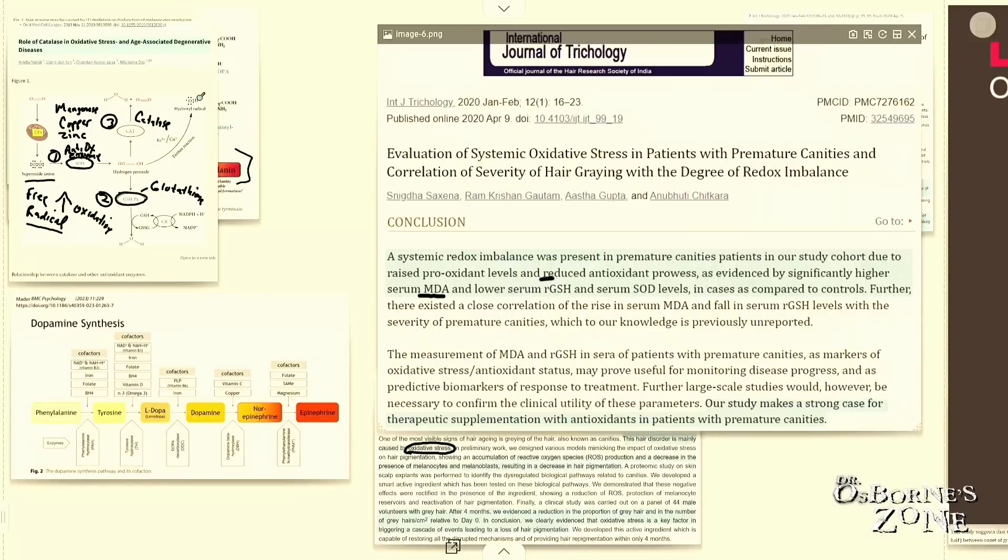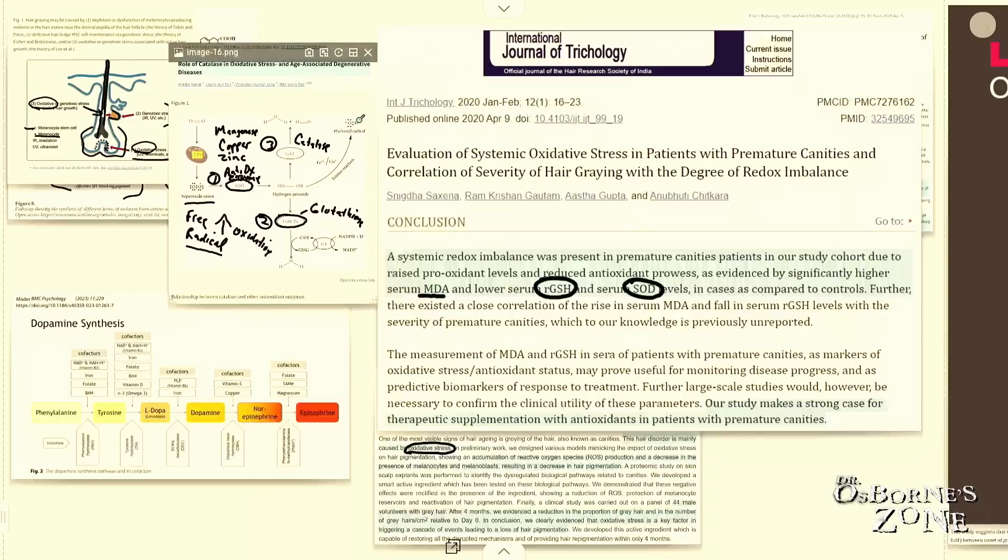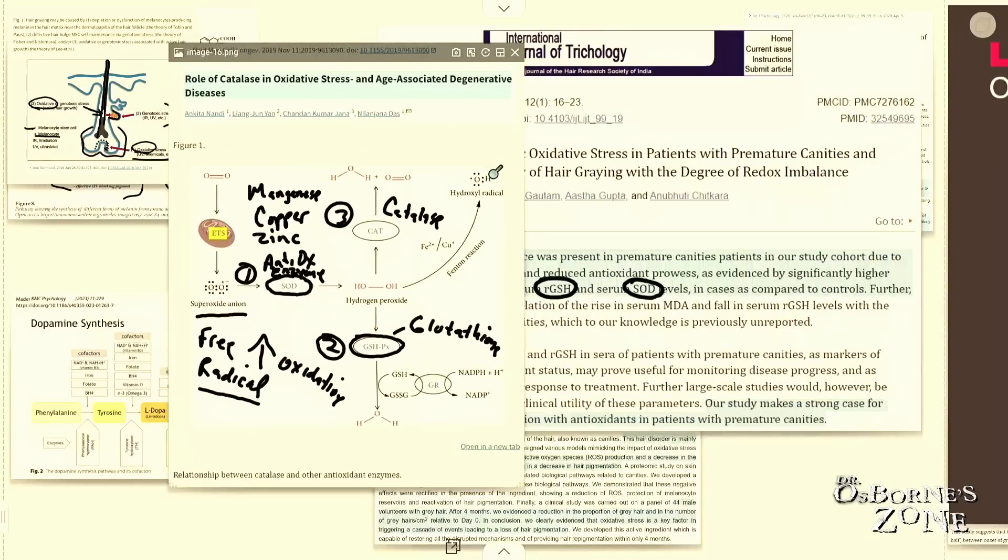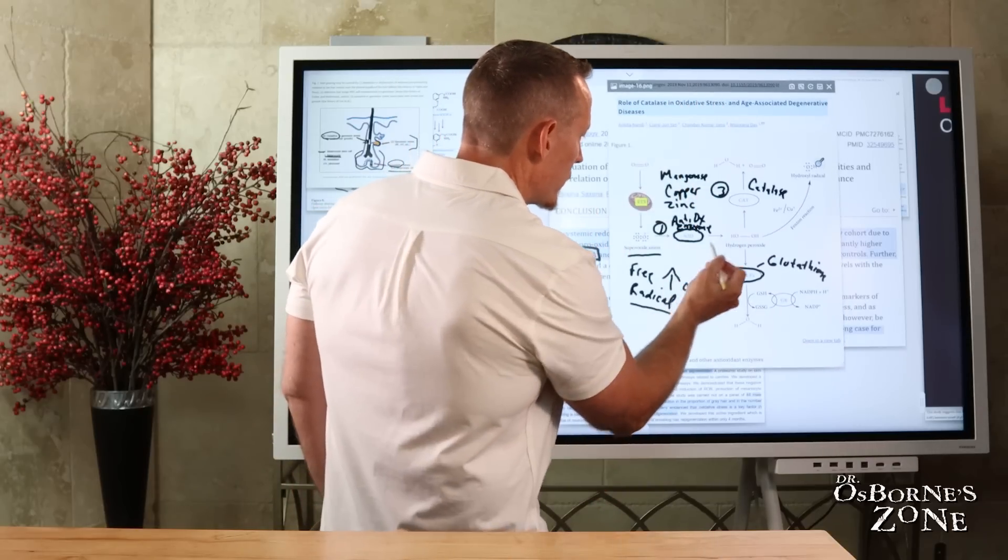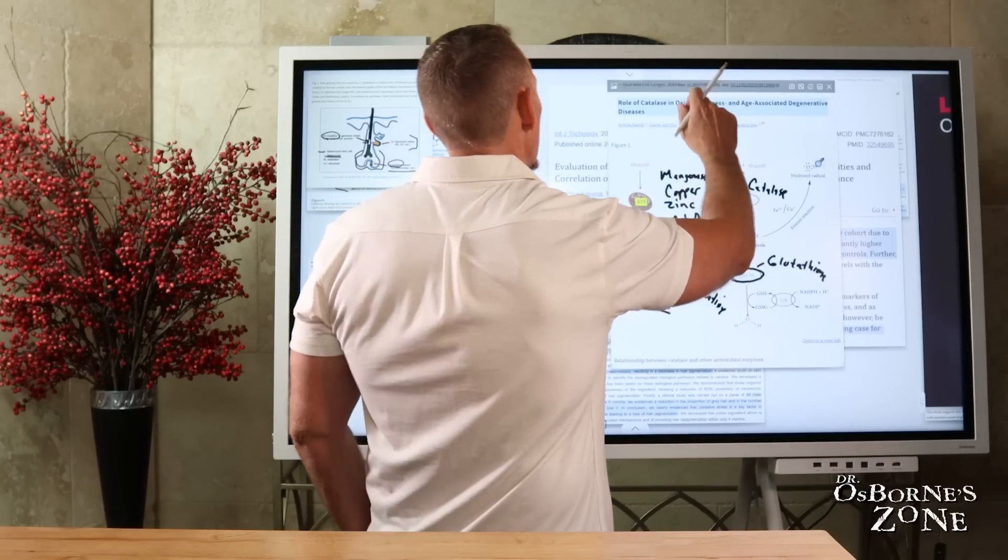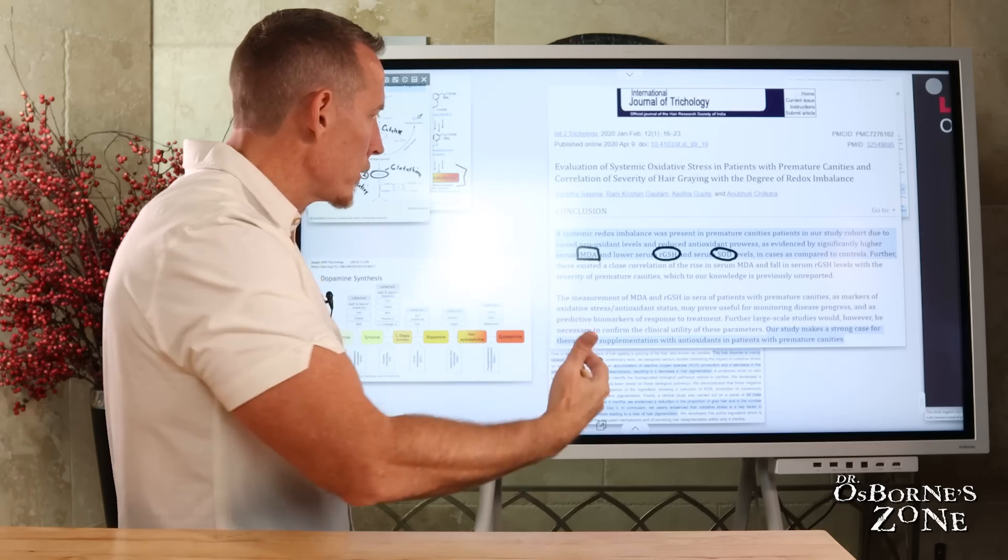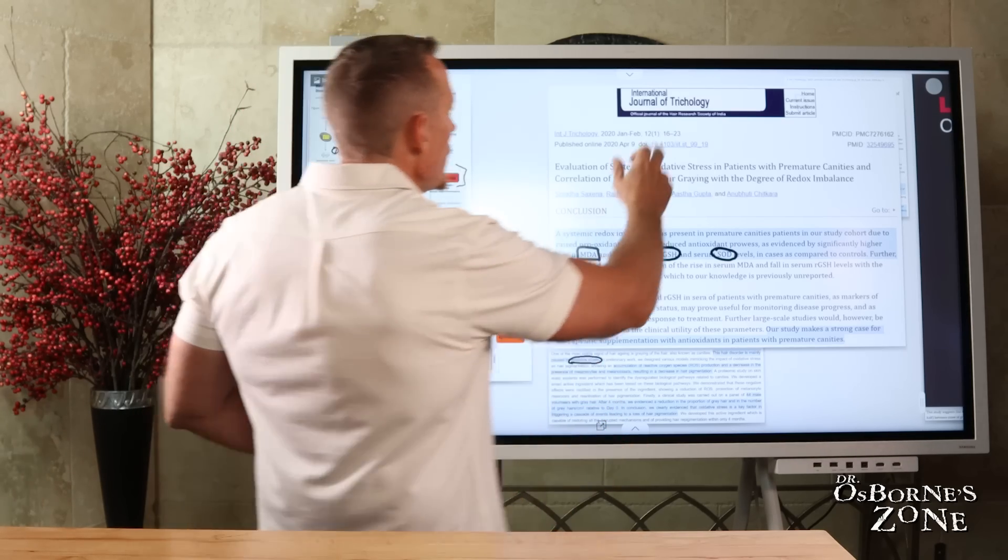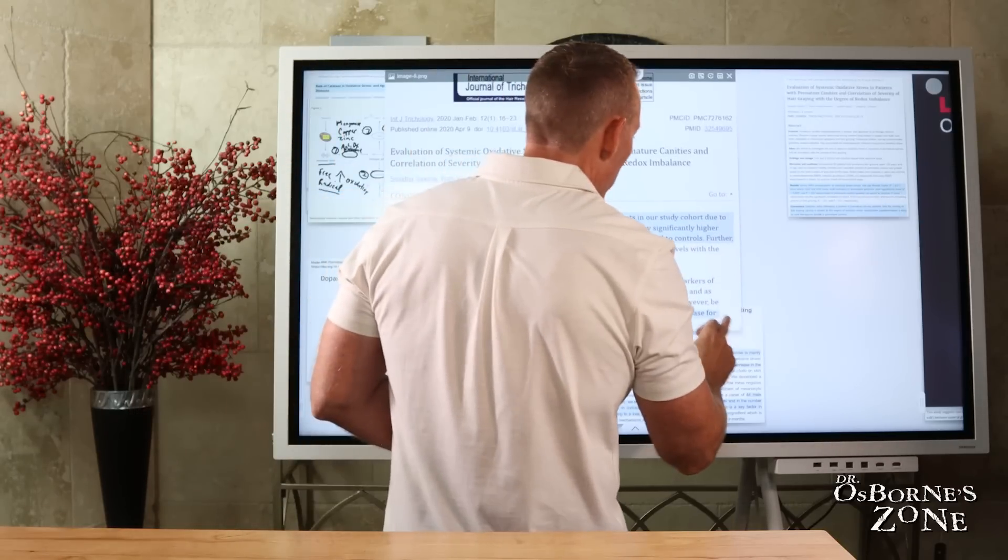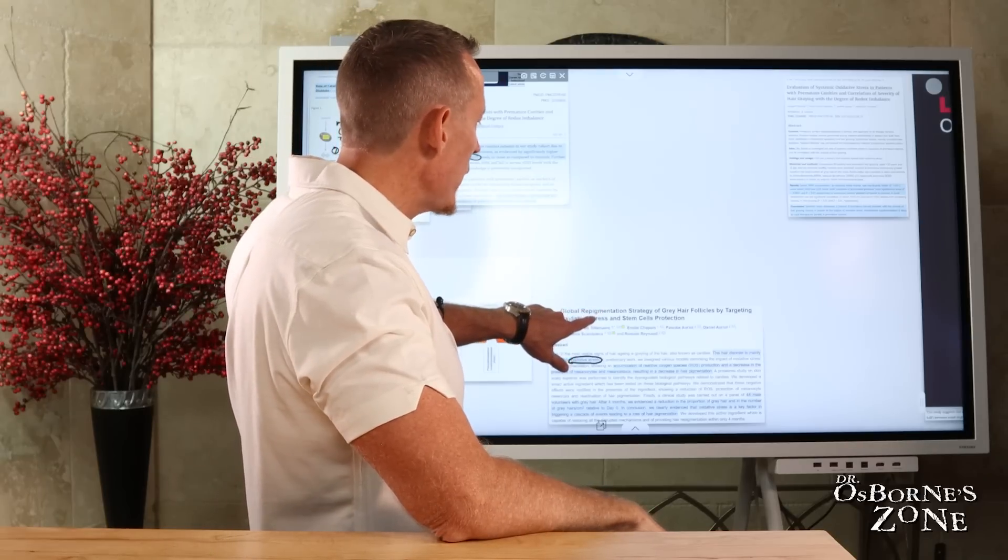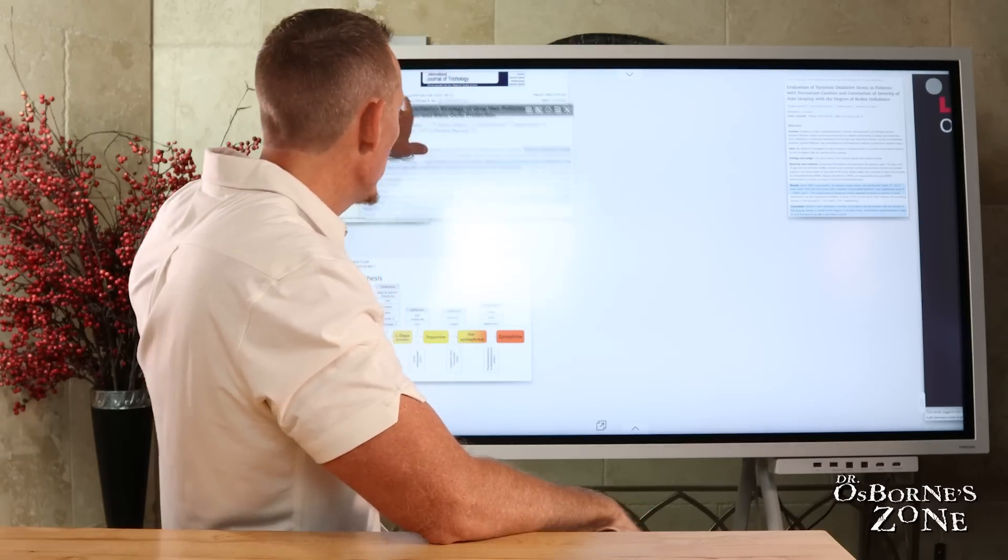Our study makes a strong case for therapeutic supplementation with antioxidants in patients with premature canities. And you can see here, this is glutathione, this is SOD. What were we just talking about a moment ago? We were talking about these patients in this study had low glutathione and low SOD, therefore they couldn't break this chemical down. That's a free radical and that free radical causes damage. So going back to this diagram, you can see here, that's the SOD, that's the glutathione peroxidase. So notice there's a lot of technical chemistry involved here, but if we're just simplifying it, if you can't get rid of the free radicals that your body is naturally going to produce by being exposed to the environment, then your hair follicles will take on damage and your hair pigmentation will go away sooner rather than later.